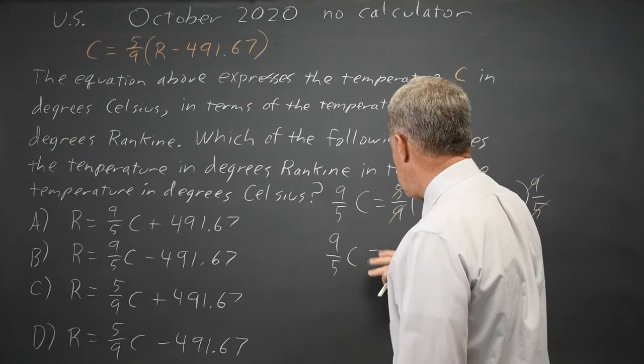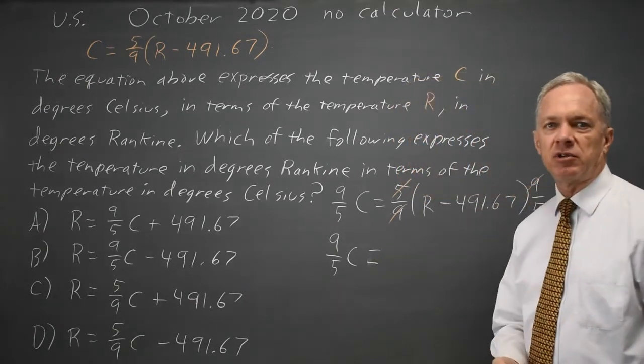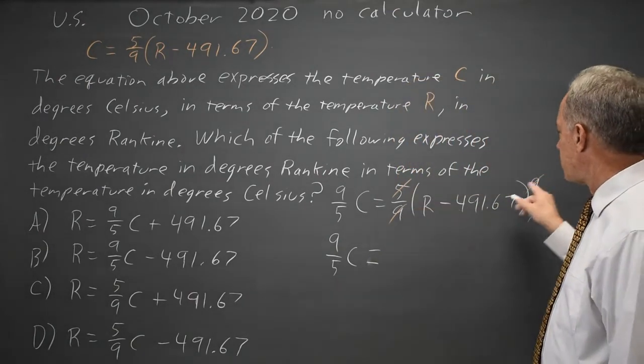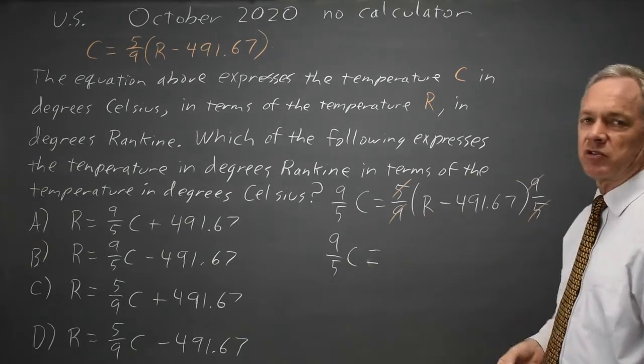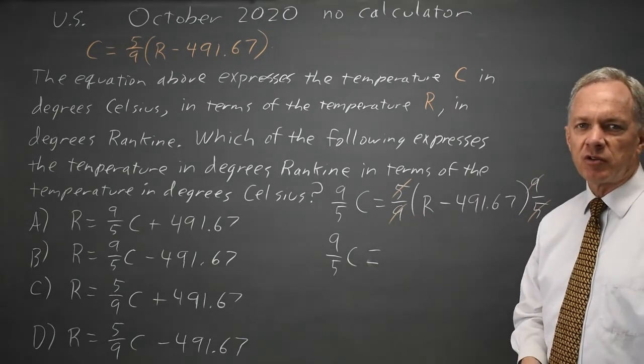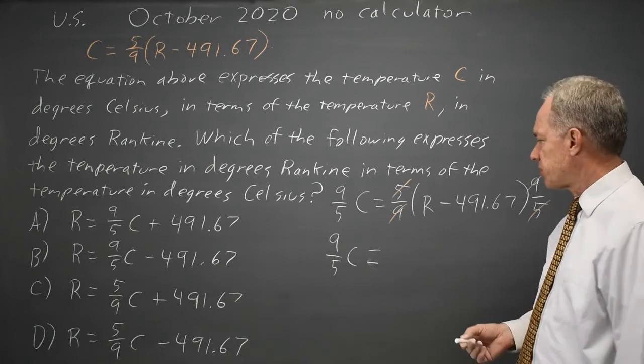You are allowed to cancel fractions like that. If you don't like it, you can multiply. 5 times 9 is 45 in the numerator. 9 times 5 is 45 in the denominator. 45 over 45 is 1. So, that justifies what I did.